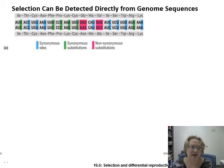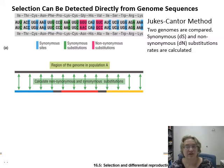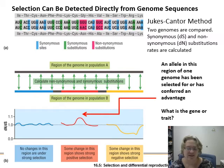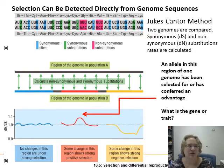We can detect selection directly from genome sequences using the Jukes-Cantor method, comparing two genomes by looking at synonymous versus non-synonymous substitutions and calculating rates of change across regions. In a genome scan, regions with no strong selection show no major changes; regions with a big change indicate positive selection occurred in one lineage; regions showing a strong decline indicate strong negative selection. This allows us to identify what genes are involved and what has happened in recent evolution — for example, identifying signatures of selection within human populations and comparing them across groups.